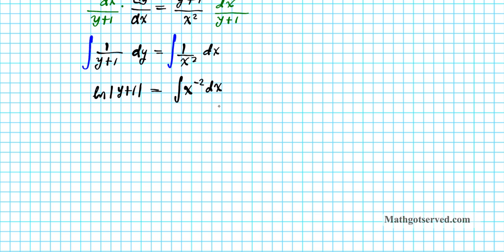So the natural logarithm of the absolute value of y plus 1 equals x to the negative 2 plus 1, which is negative 1, over negative 2 plus 1, which is also negative 1. Now there's something you must not forget, which is that constant C when you're solving indefinite integrals. If you forget the C, you're going to lose a lot of points — you'll just get zeroes. So do not forget the C; it's very, very important.